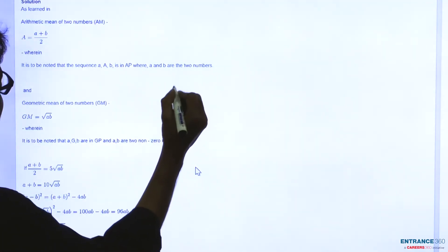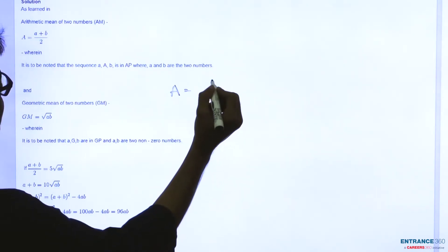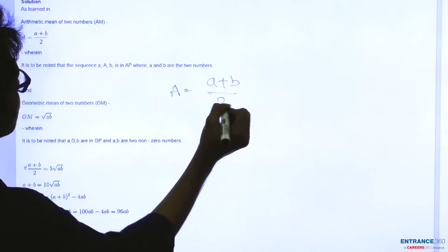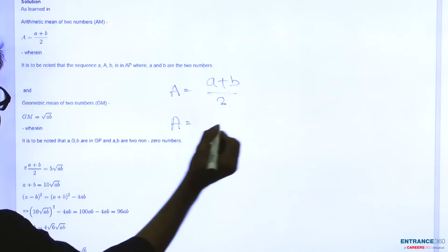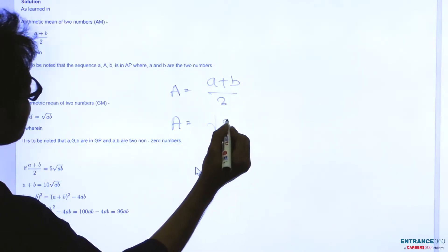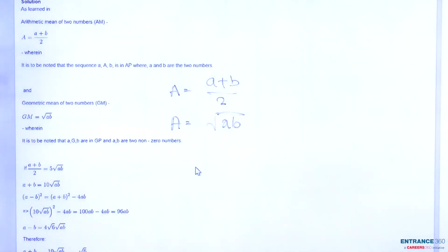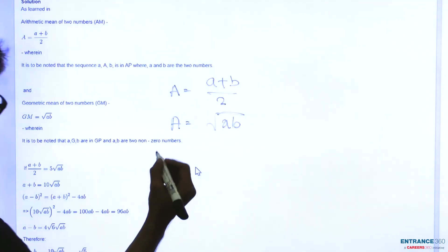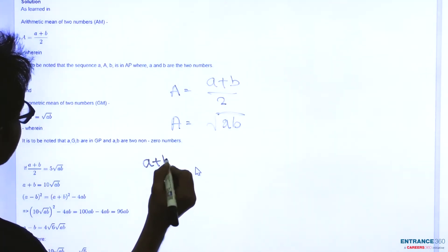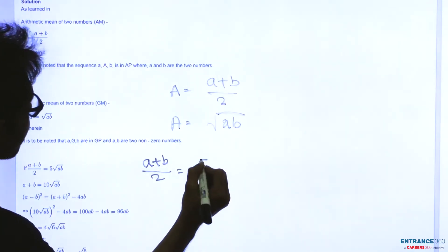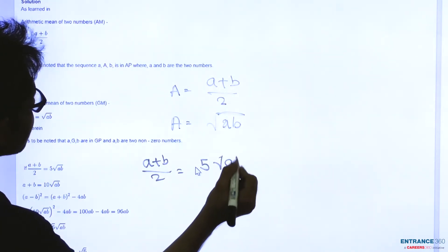So arithmetic mean of two numbers is (A+B) divided by 2, and geometric mean is equal to root of A times B. In the question it is given (A+B)/2 = 5√(AB).